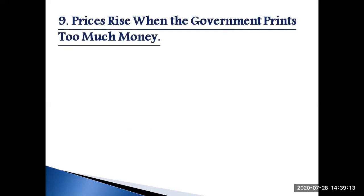Principle nine: prices rise when the government prints too much money. Have you ever wondered why the government does not simply print more money when it runs out? Doesn't that seem like the easiest way out of debt? We cannot print money at home because that would be illegal, but surely the government can — and sometimes it actually does. Then why does it not do it as often as we expect? Is there some hidden problem? Let's go back in history to find out.